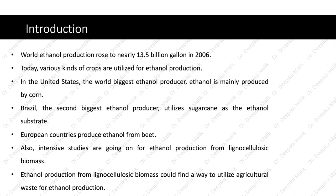World ethanol production rose to nearly 13.5 billion gallons in 2006. Today, various kinds of crops are utilized for ethanol production. In the United States, the world's biggest ethanol producer, ethanol is mainly produced by corn. Brazil, the second biggest ethanol producer, utilizes sugarcane as the ethanol substrate.